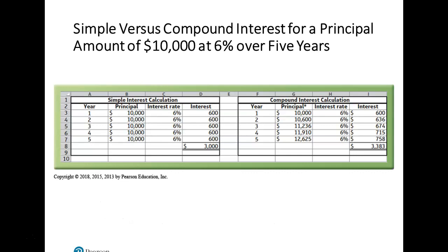A time element depends on an interest rate factor. An interest rate also considers inflation and the economy. It can be very useful to see what money is worth now versus what it's worth in the future and vice versa. This illustrates a principal interest based on simple interest — principal times the interest rate times time — versus a compound interest calculation, and you see there's a $383 difference. This becomes very important.